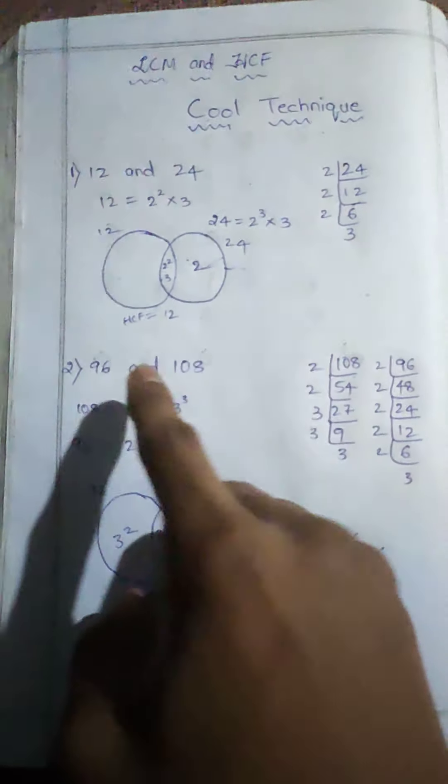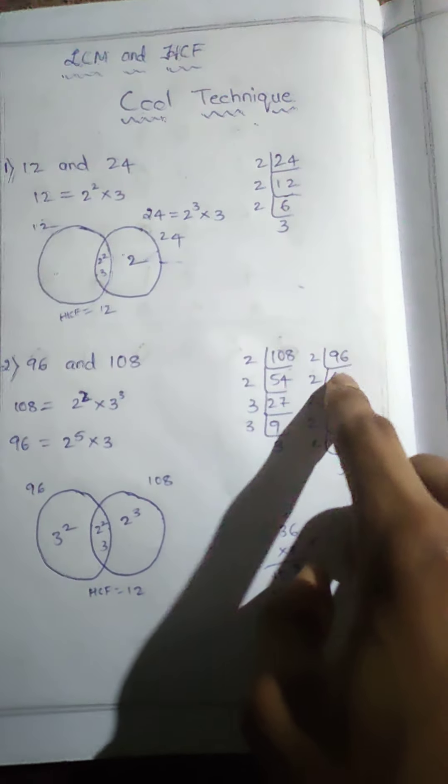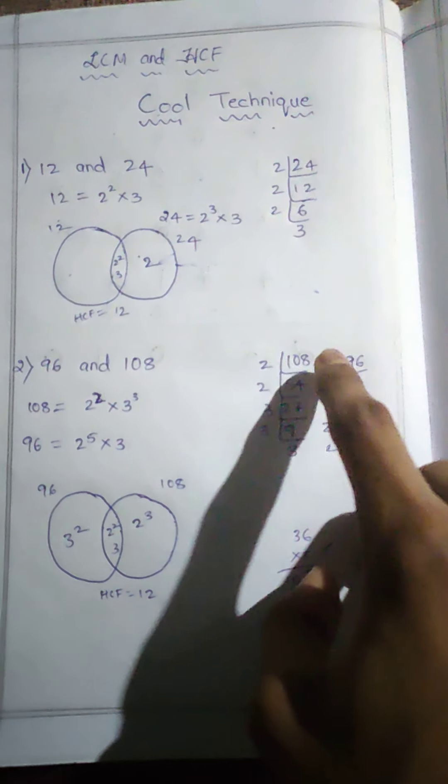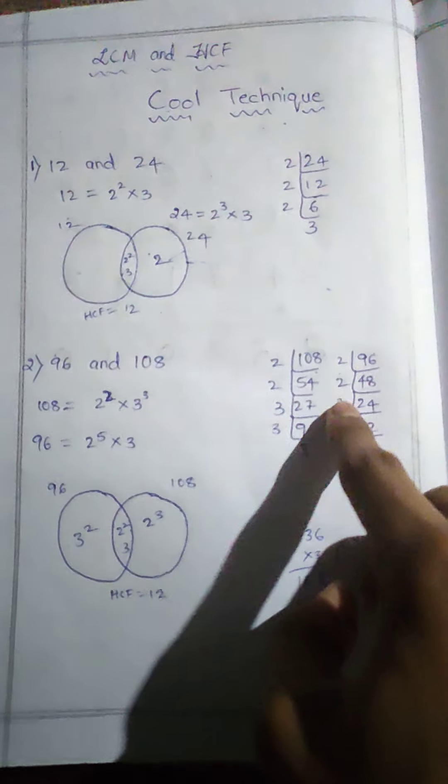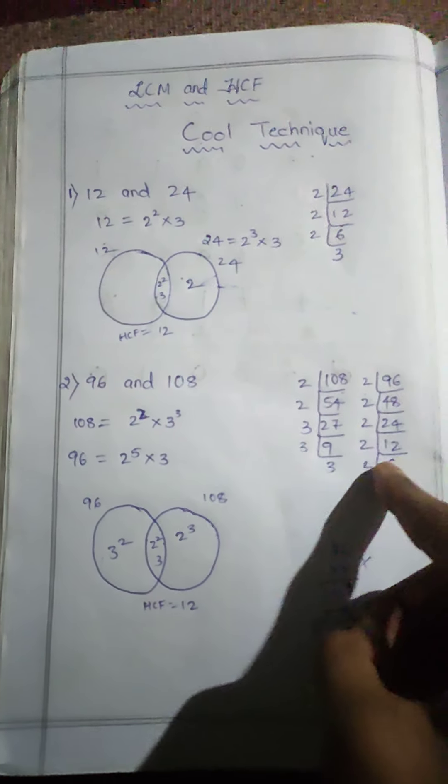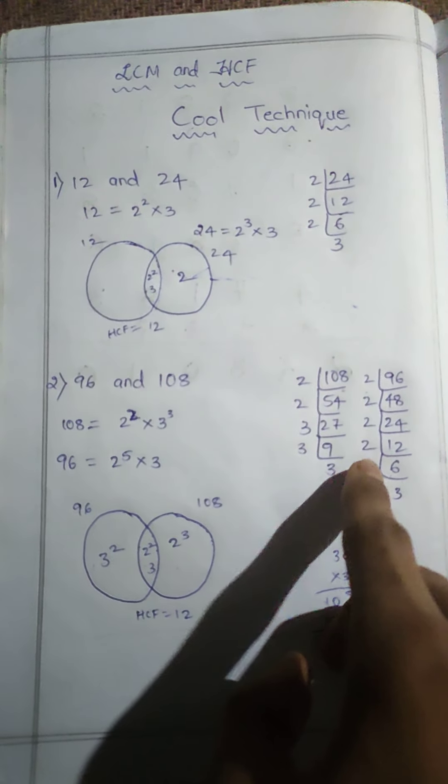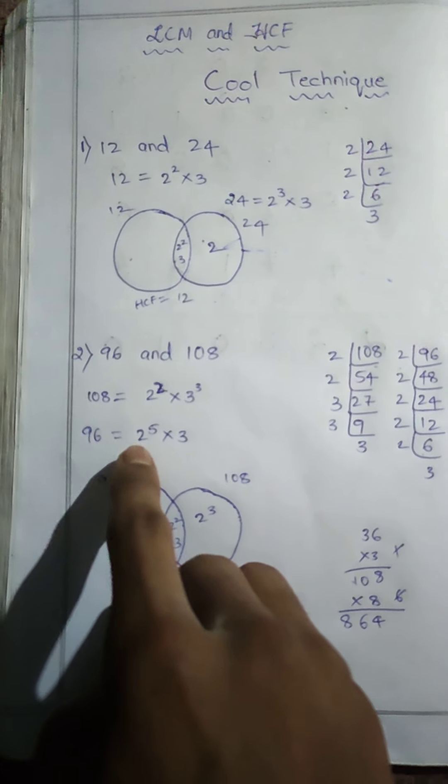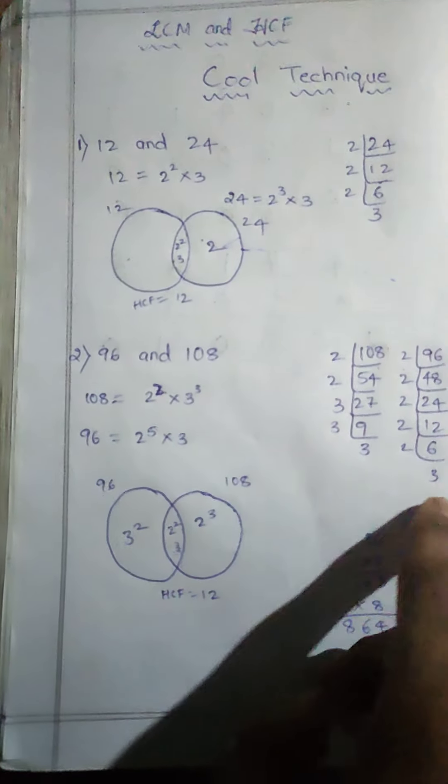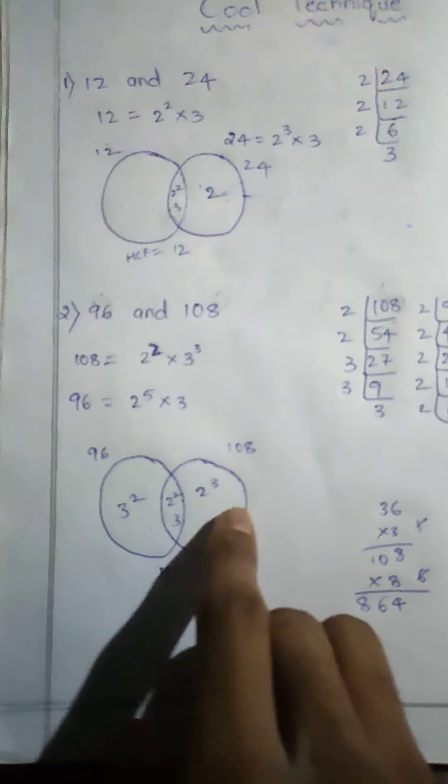Prime factorization of 96: 48 divides 96 by 2, 24 divides 48 by 2. Write the prime factorization in this form. How many 2s are there? 1, 2, 3, 4, 5. So 96 equals 2 to the power of 5 into 3.